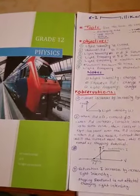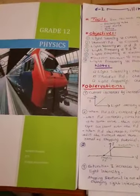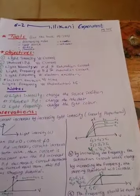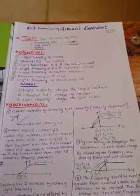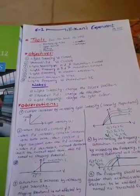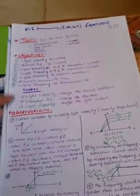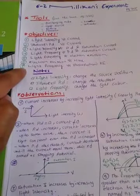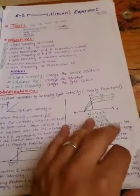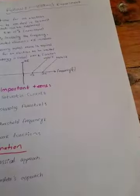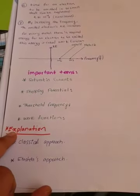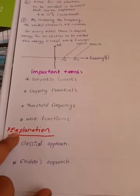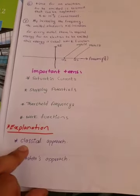As-salamu alaykum wa rahmatullah, boys and girls of grade 12. We will continue our online lessons. In the previous video we discussed Millikan's experiment — the tools, the objectives, and the observations. We covered all seven observations, and in this video we're going to discuss the explanation part. But before that, we'll discuss classical physics and Einstein's theory.